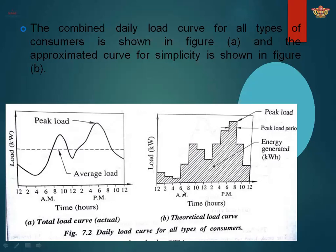The combined daily load curve for all types of consumers is shown in a figure. The theoretical load curve shows average load represented by dotted line; the actual peak load appears at 6–8 PM. On a bar graph representation, the highest value is obtained at 8 PM — the maximum load condition. Residential and commercial load types contribute to peak load, and energy generated is expressed in kilowatt-hours.